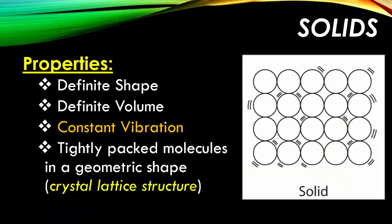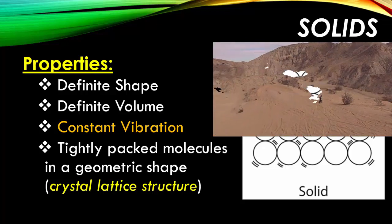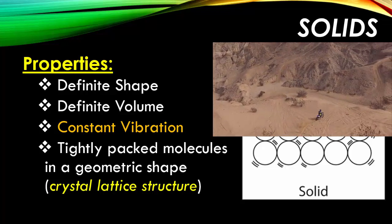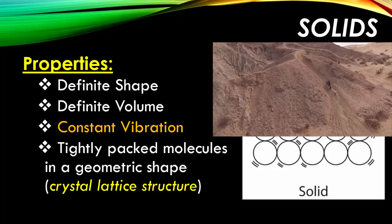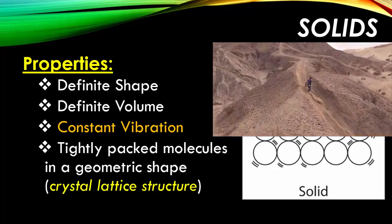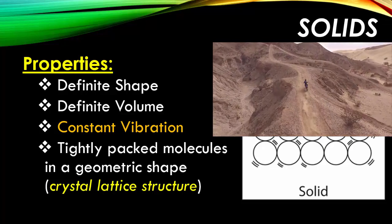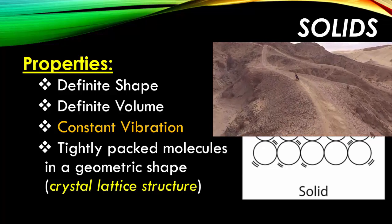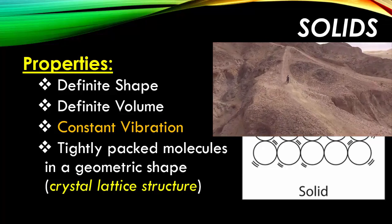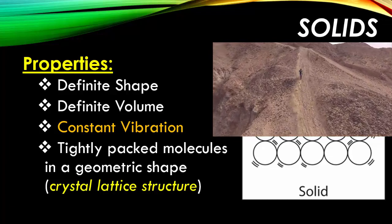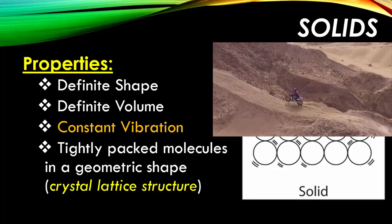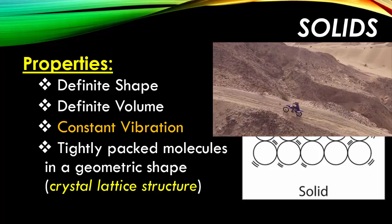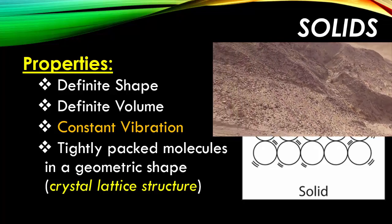Solids are going to be our foundation for talking about matter. When we think about solids, they're always going to be something of a definite shape. It's never going to change unless some sort of reaction occurs. It will always be the same volume. Because of that, the molecules are always jam-packed right next to each other, but they are always vibrating. You have to think of them as a tightly packed geometric shape. Chemists call this a crystal lattice structure. All solids have a very geometric shape to them.